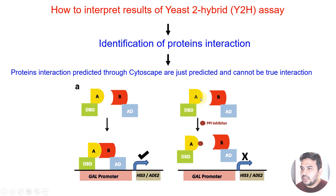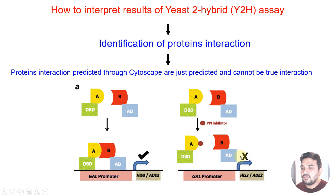If there is protein-protein interaction inhibition, then this gene will not express and as a result there will be no clone or no colony formation.